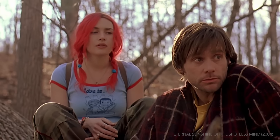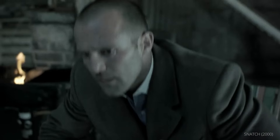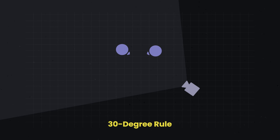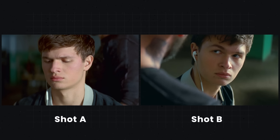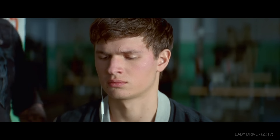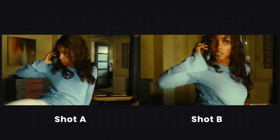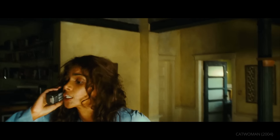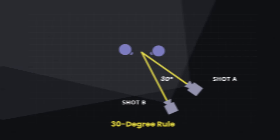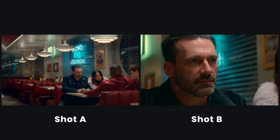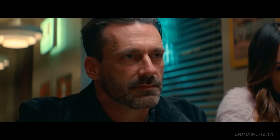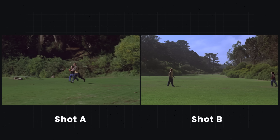Jump cuts or the appearance of jump cuts are often an intentional technique, but if that is not the effect you are looking for, remember the 30-degree rule. The 30-degree rule states that the difference in angle between shot A and shot B should be at least 30 degrees, assuming you are keeping the same shot size — this gives enough of a visual difference when cutting between shots. If the angle is less than this, it can create the appearance of a jump cut. Another option to avoid this would be to keep the same angle but change the shot size significantly; for example, cutting from a wide shot to a close-up feels much more natural than cutting between two slightly different wide shots.